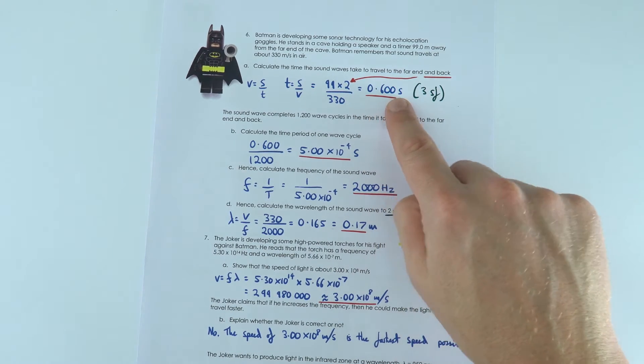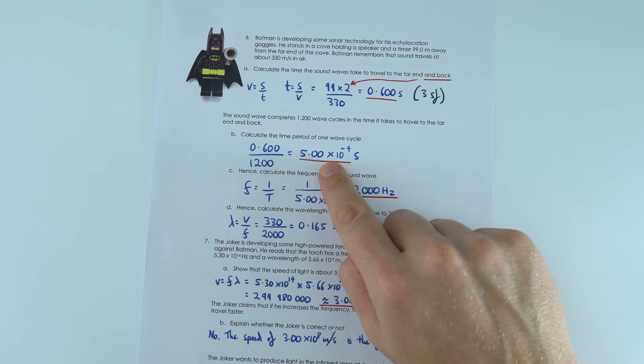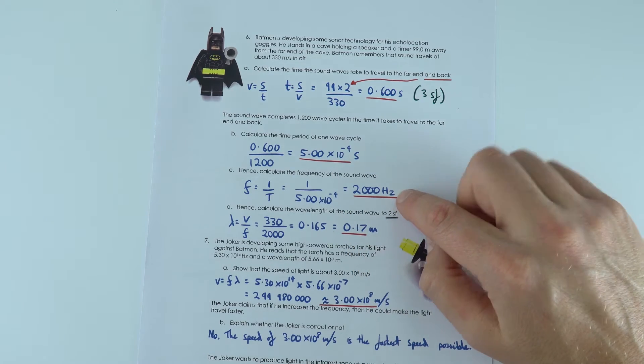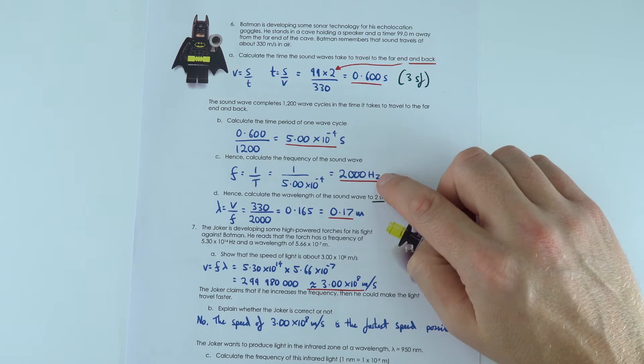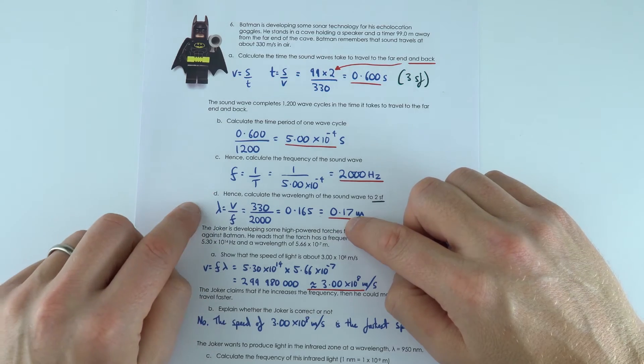But we can then use this value here because we know the time and we know how many wave cycles occurred to work out the time for one wave cycle. And then I just did one over that time period there to find that this was 2000 hertz. So often with sound waves we have really high frequencies, and this then allowed us to work out the sound wave using v equals f lambda, that wave speed equation.